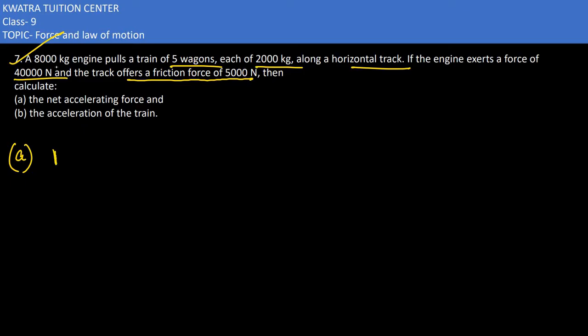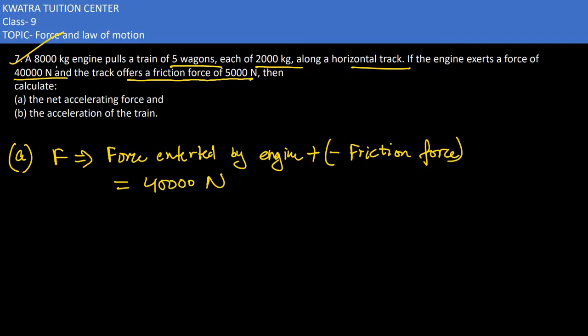Net accelerating force is nothing but the total force acting on the whole body. It would be force exerted by engine minus the frictional force. In this case, we have the total force as 40,000 N exerted by the engine, and the opposite force acting on it is 5000 N. So 40,000 N minus 5000 N would be 35,000 N.